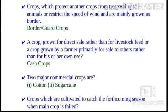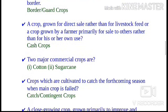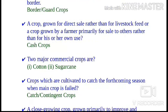A crop grown for direct sale rather than for livestock feed, or a crop grown by a farmer primarily for sale to others rather than for his or her own use, is known as a cash crop. Examples of cash crops are sugarcane and tobacco. Two major commercial crops are cotton and sugarcane.